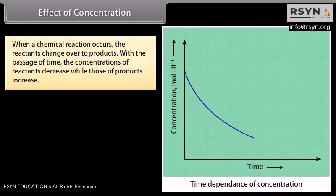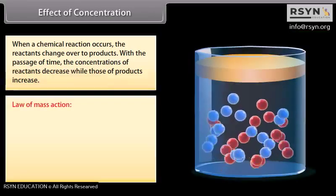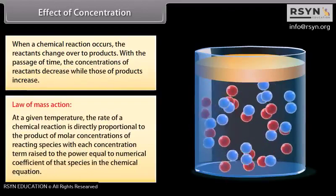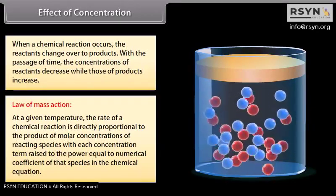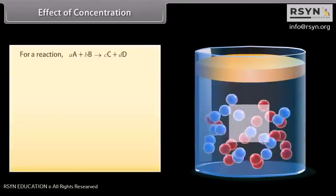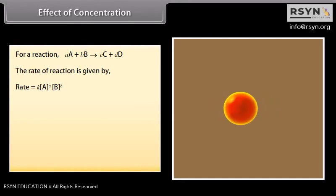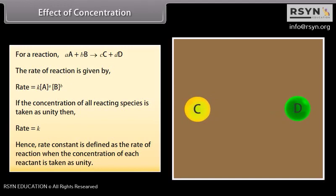When a chemical reaction occurs, the reactants change over to products. With the passage of time, concentrations of reactants decrease while those of products increase. Law of mass action: at a given temperature, the rate of a chemical reaction is directly proportional to the product of molar concentrations of reacting species, with each concentration term raised to the power equal to the numerical coefficient of that species in the chemical equation. Rate = K[A]^a[B]^b. If the concentration of all reacting species is taken as unity, then rate equals K; hence rate constant is defined as the rate of a reaction when concentration of each reactant is unity.